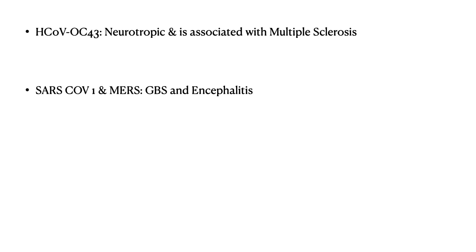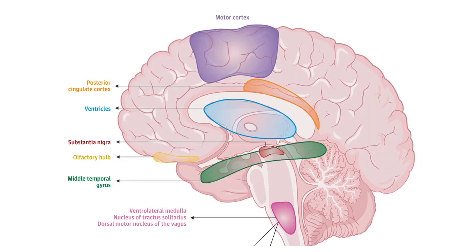Coming to SARS-CoV-2, the COVID-19 infection, this virus enters primarily through the ACE2 receptors. The sites in the brain where ACE2 receptors are found include the motor cortex, the posterior cingulate cortex, ventricles, substantia nigra, olfactory bulb, middle temporal gyrus, and the ventrolateral medulla.